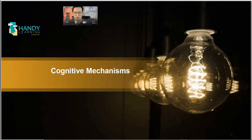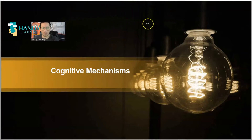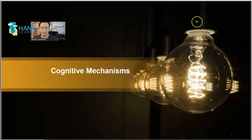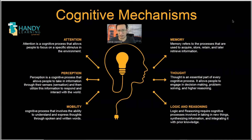After that, we should talk about the different mechanisms that are happening in a person when he is learning a second language. The first set of mechanisms is the cognitive mechanisms. These mechanisms happen in the brain, and we know them as cognitive skills as well. They are memory, thought, logic and reasoning, mobility, perception and attention.